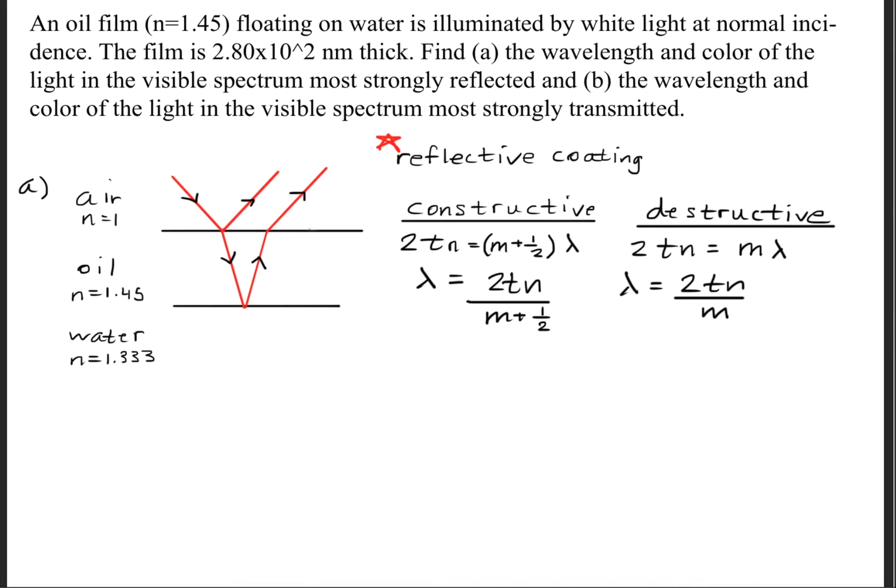We're going to rearrange so that we can solve for the wavelength. Next, we're going to evaluate the constructive interference formula at different m integers, plugging in different values for this m variable.